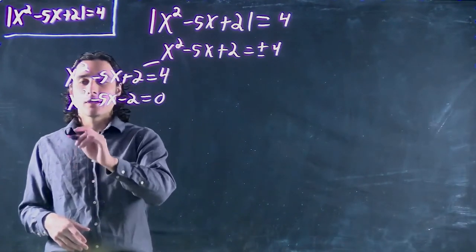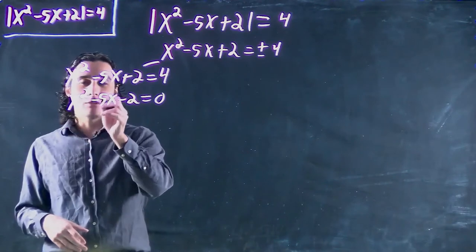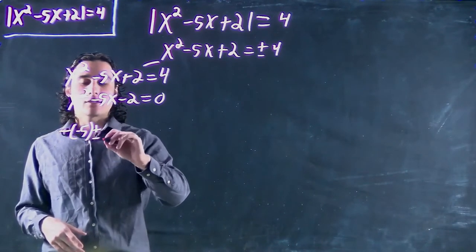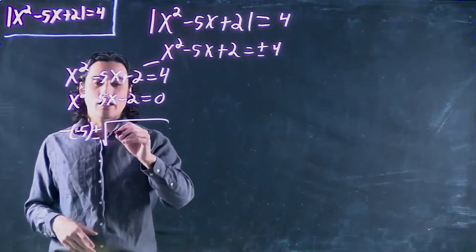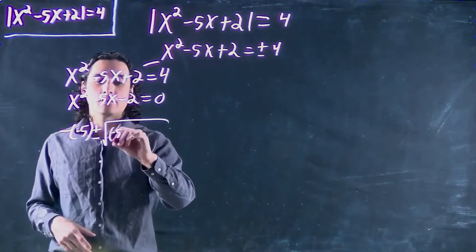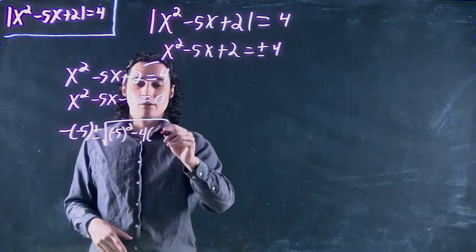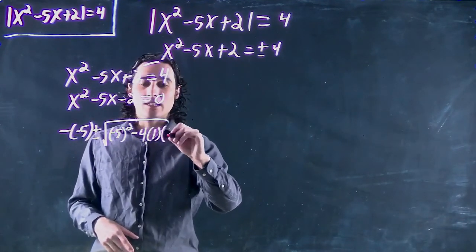So in this case we do minus b, which is minus minus 5, plus or minus the square root of b squared. So minus 5 squared minus 4 times a, which in our case is 1, times c, which is minus 2.